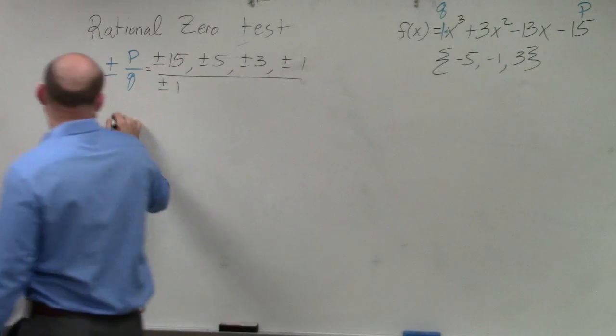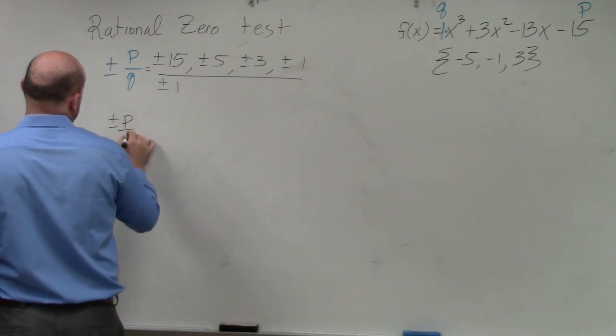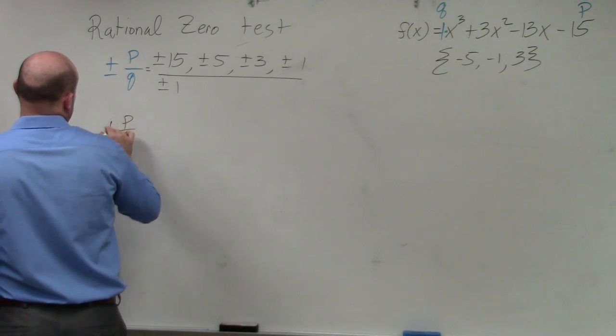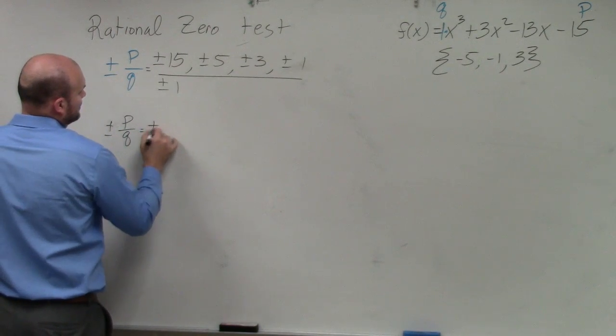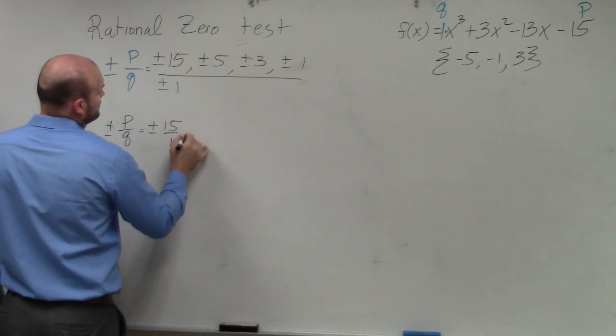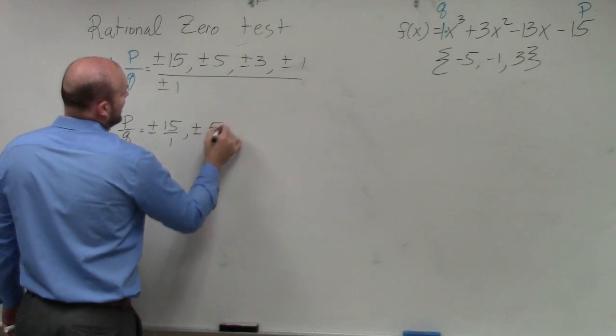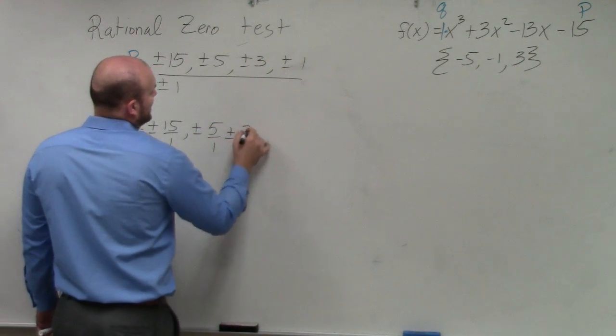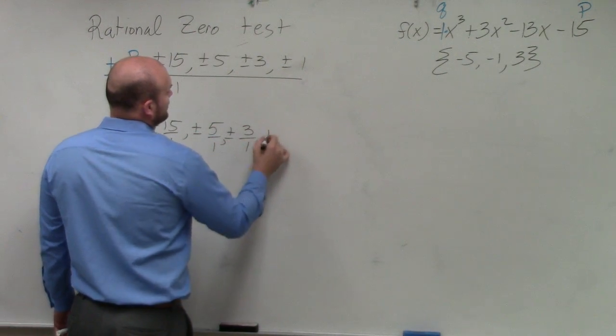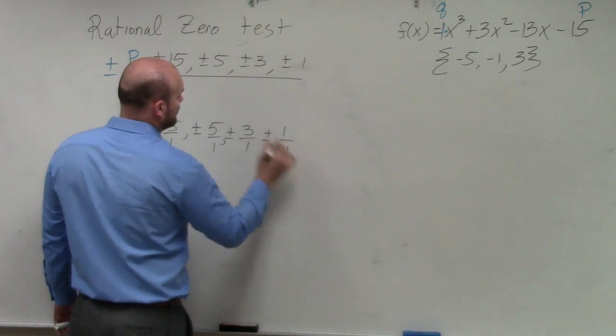So my possible rational zeros is going to be plus or minus 15 over 1, plus or minus 5 over 1, plus or minus 3 over 1, plus or minus 1 over 1.